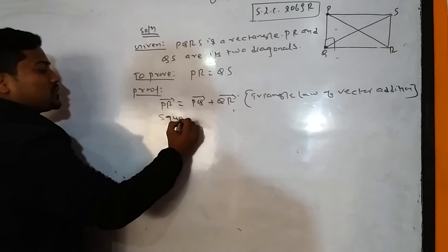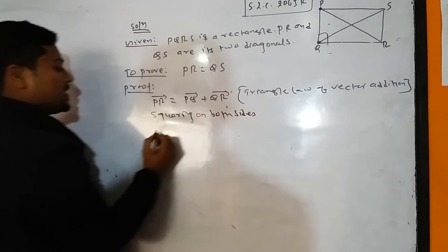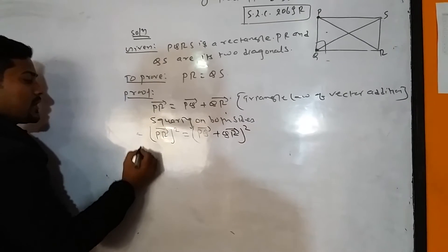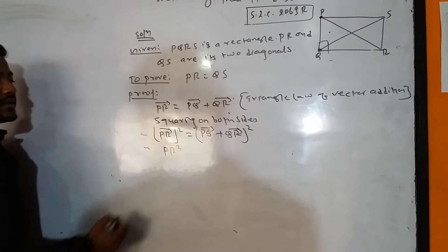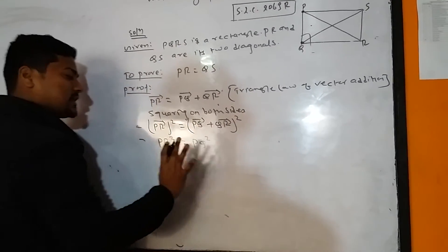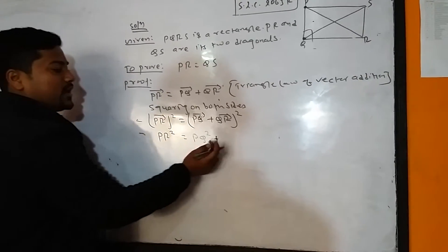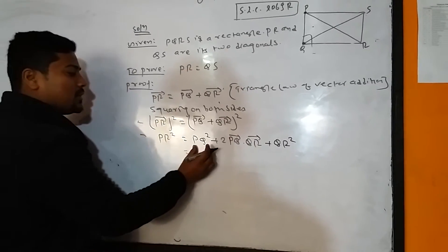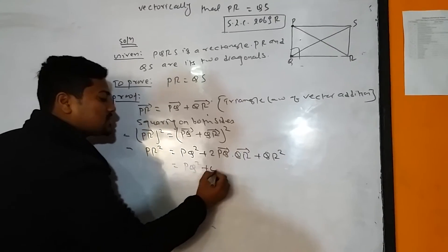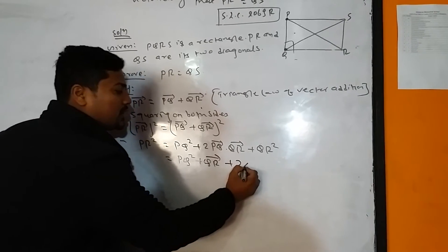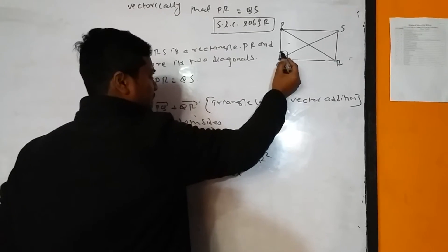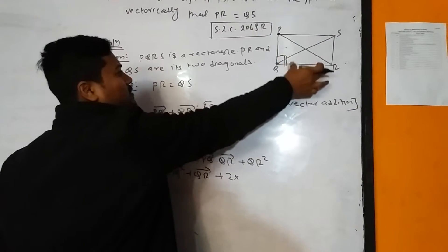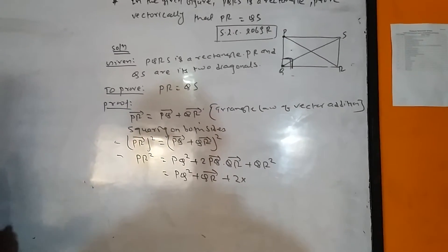Now squaring on both sides: PR vector whole square equals PQ vector plus QR vector whole square. The vector sign removes, giving PR square equals PQ square plus 2 times PQ vector dot QR vector plus QR square. Since each angle in a rectangle is 90 degrees, PQ vector dot QR vector equals zero.